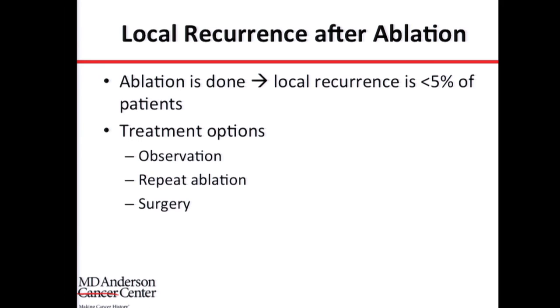I'll go over three treatment categories: recurrence after ablation therapy, recurrence after partial nephrectomy, and recurrence after radical nephrectomy. For recurrence after ablation — patients who had cryoablation or radiofrequency ablation — we do routine imaging every six months with CT or MRI, and the risk of recurrence should be less than 5% to 10% if patients and tumors are carefully selected.